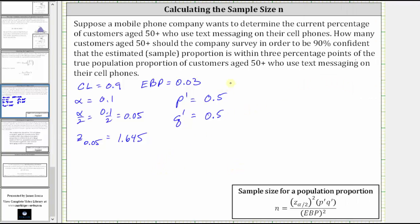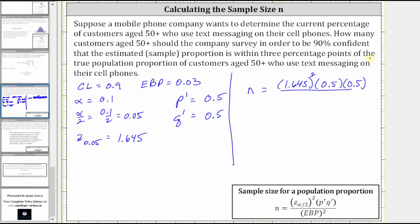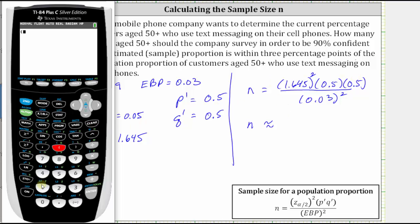So now we have all the information we need to find N. The sample size N equals, in the numerator, the square of the Z-score — so 1.645 squared — times P-prime times Q-prime, which is 0.5 times 0.5, all divided by the error-bound squared, which is 0.03 squared. On the calculator: open parenthesis, 1.645 squared, times 0.5 times 0.5, closed parenthesis, divided by 0.03 squared.